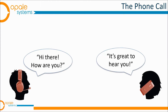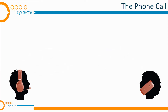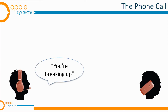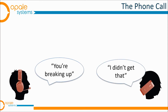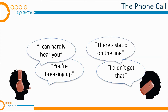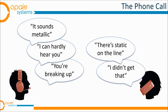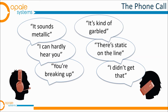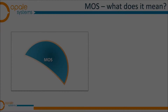When people call each other they want to communicate freely and the phone system shouldn't get in the way of that. But when issues do occur, people will often choose informal ways to describe the experience — which is not always very helpful to the QA engineer who has to figure out what's going wrong.